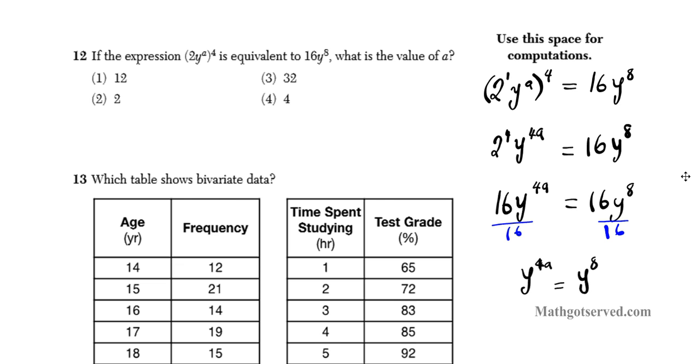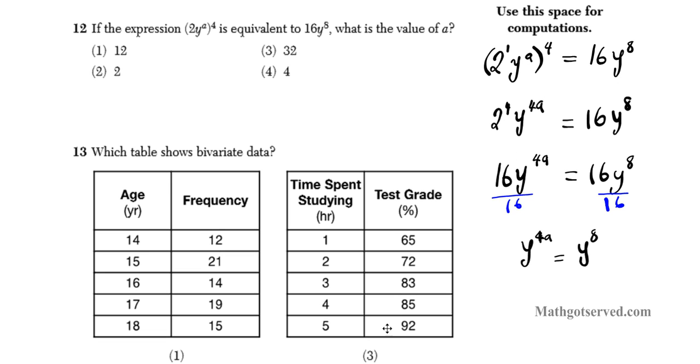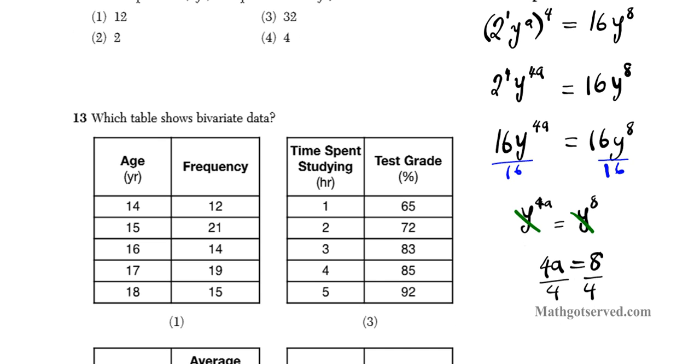Now since the bases are equal, we can take log base y, but I don't want to do log with them here. But we can just simply drop the y's because they're both the same, so we focus on the powers. We know that 4a has to be equal to 8 since y is equal to y. So 4a equals 8, this basically means what do you multiply by 4 to get 8? The answer is 2. We can clearly see the answer is 2. So just to show the work, divide by 4 both sides, and you get your final answer.